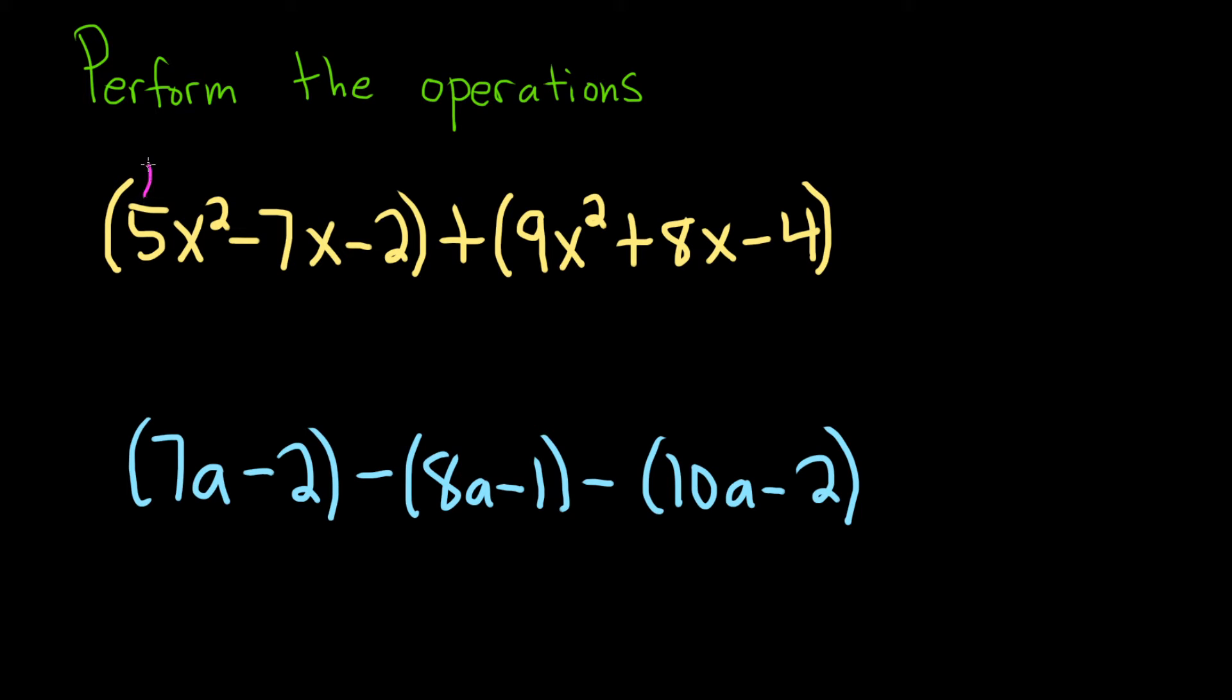So we have 5x² plus 9x². That's going to give us 14x². Then we have a negative 7x and a positive 8x. That's going to give us x. And then negative 2 plus negative 4 is going to give us negative 6. And that is the answer to the first part.